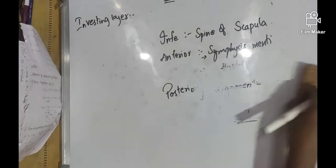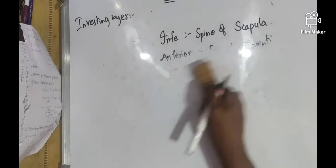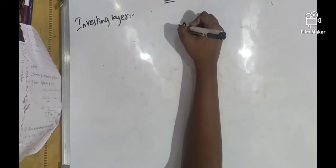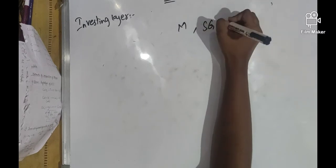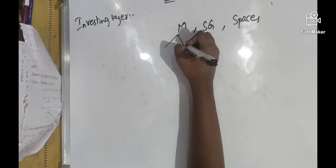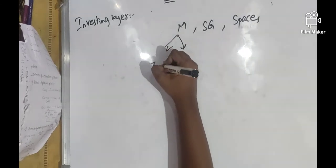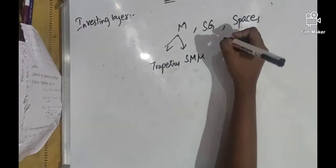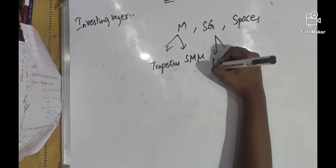The investing layer of deep cervical fascia splits and encloses muscles, salivary glands, and spaces. We have trapezius and sternocleidomastoid muscle, and salivary glands.